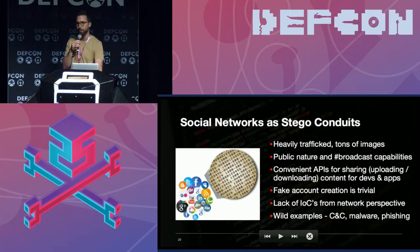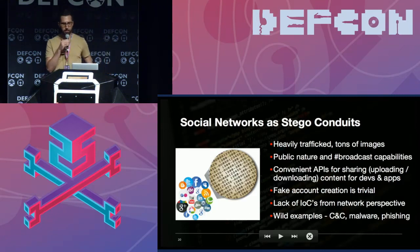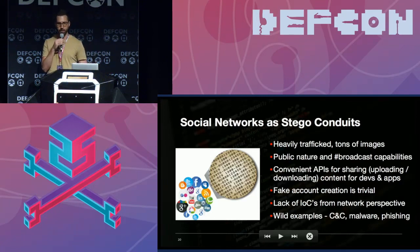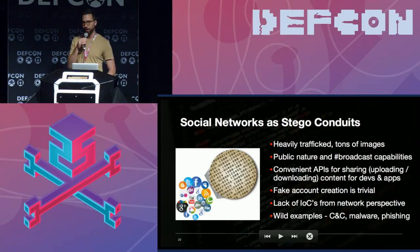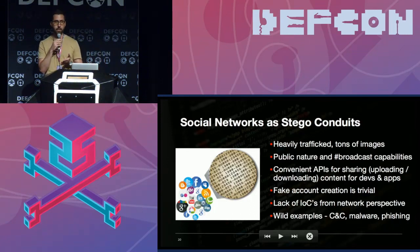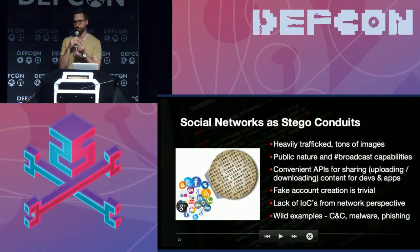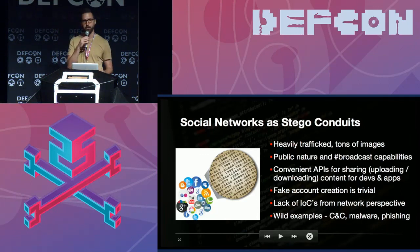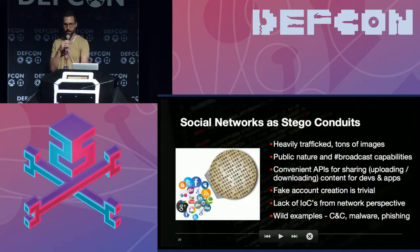From a network or forensics perspective, social networks look completely benign. Interacting through a social network doesn't raise any red flags — it's expected; people post on social media at work all the time. In addition to these characteristics, there are many examples of these things happening in the wild. I split it into black hat versus white hat. The most prominent black hat example was HammerToss, discovered by FireEye a few years ago.